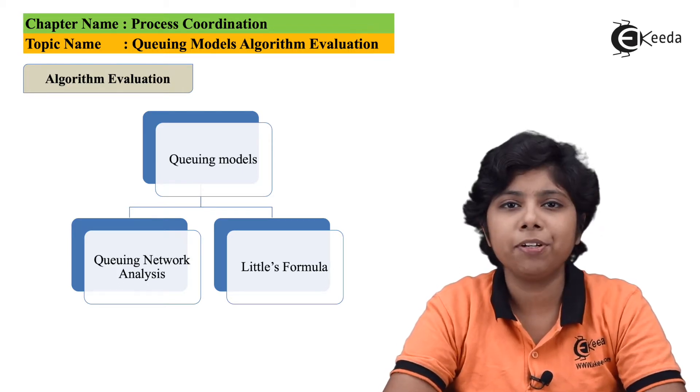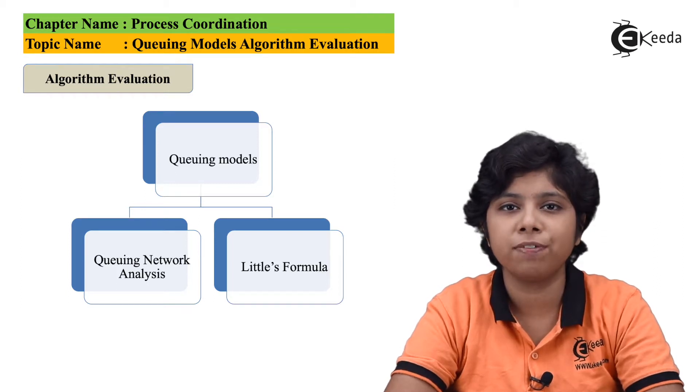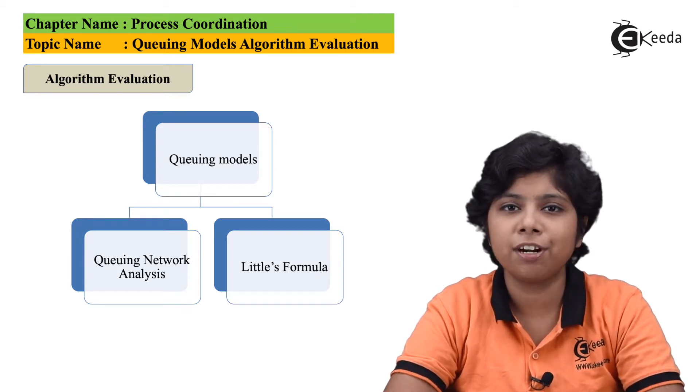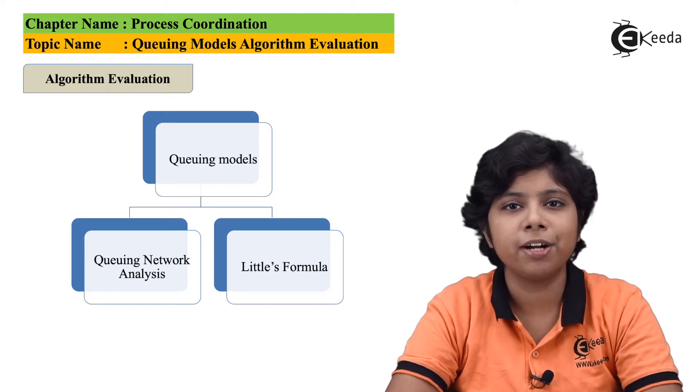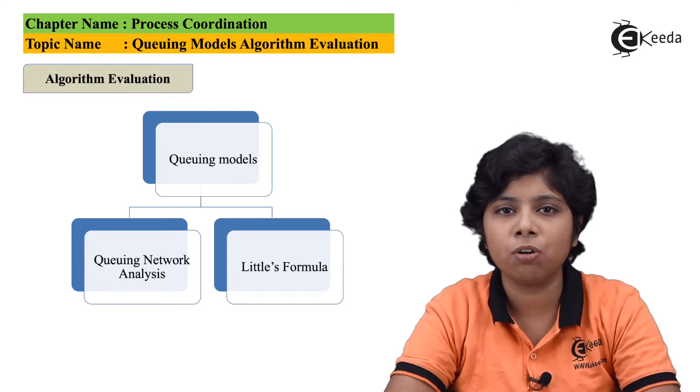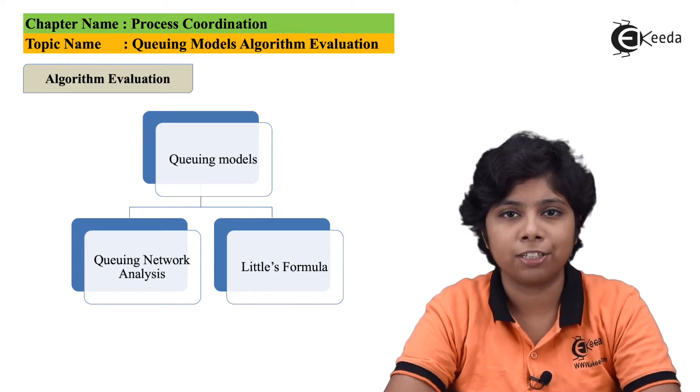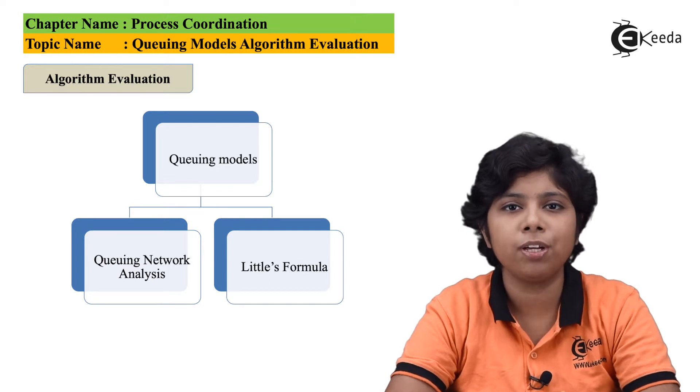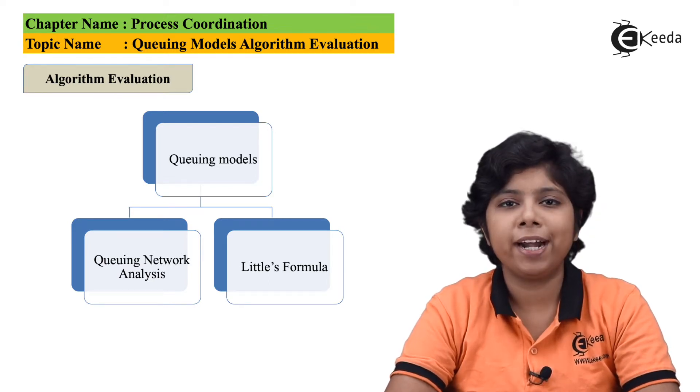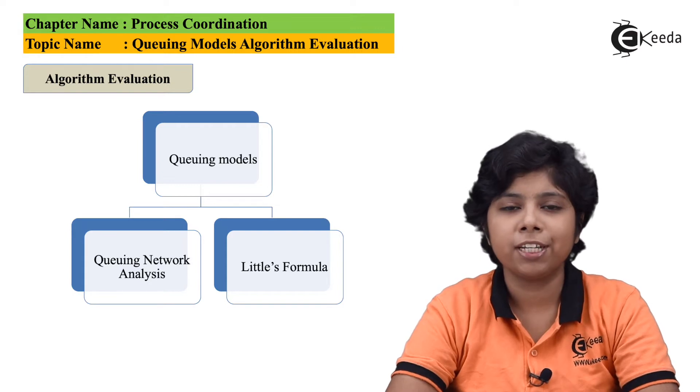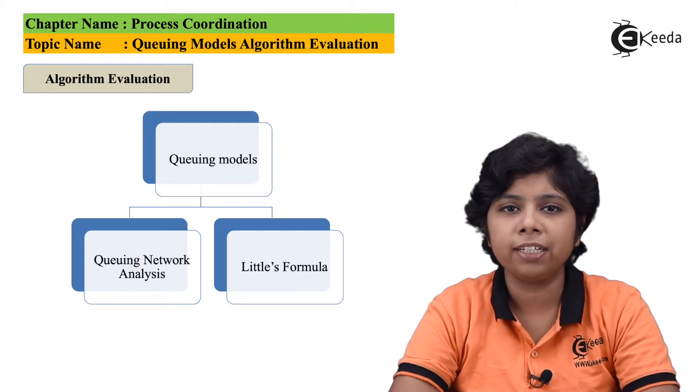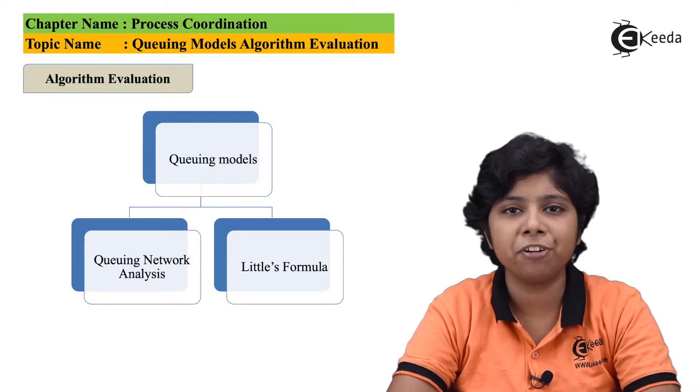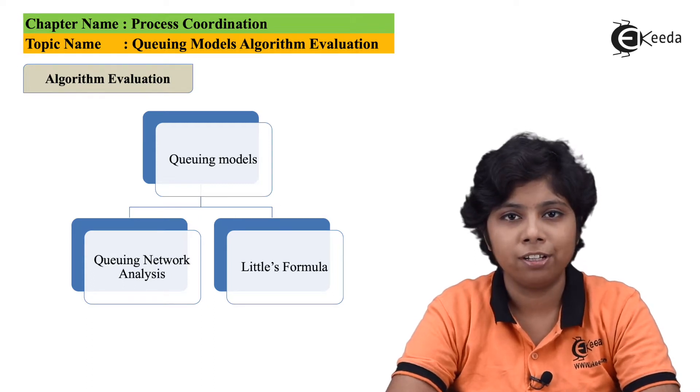The computer system is often considered as a network of servers, with each server as a queue of waiting processes ready to be executed. Like the CPU server is ready with its ready queue and I/O server with its device queue. Now every server that is waiting for the processes to be executed can be done with this queuing network analysis. Knowing the arrival rates, service rates, we can calculate the average queue length, the average waiting time, the average CPU utilization and all.